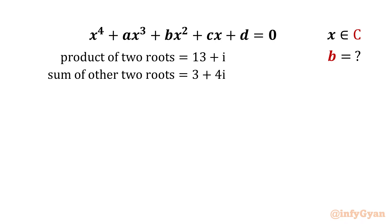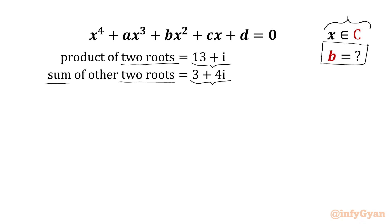We have one quartic equation x^4 + ax^3 + bx^2 + cx + d = 0 whose roots are complex. Given that the product of two roots equals the complex number 13 + i, and the sum of the remaining two roots is the complex number 3 + 4i. We have to find the value of b, which is the coefficient of x^2.